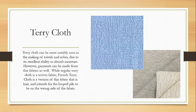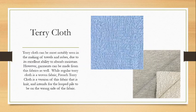Next is terrycloth, another very popular and recognizable fabric most notably seen in towels and robes due to its excellent ability to absorb moisture. Terrycloth always has a looped pile — you can see the little loops coming up — and that extra cotton, combined with cotton's natural absorbency, makes it very absorbent. Garments can be made from terrycloth as well; they're very comfortable because of their ability to wick sweat.